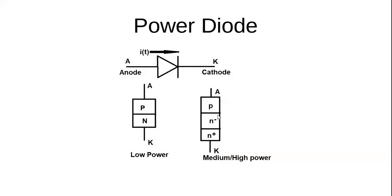The more lightly doped this layer is — the smaller the concentration — the more voltage it will be able to block. The physical size also matters. A larger width of that lightly doped region is needed. What you're trying to create is something that behaves like an insulator — very few mobile electrons, just as you'd have in an insulator. Think of a piece of wood: there are hardly any mobile electrons in wood, which is why it's such a good insulator. The thickness of this layer matters — a larger piece of wood is a better insulator than a tiny piece of wood.